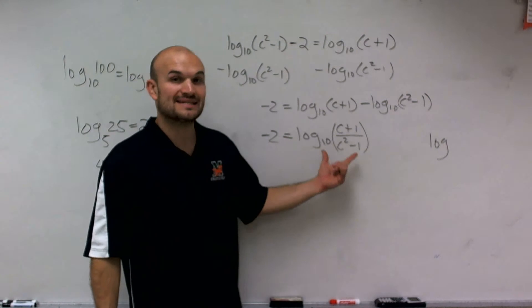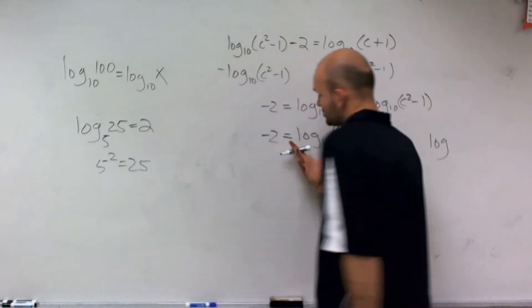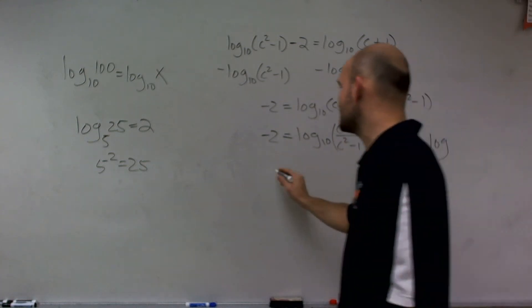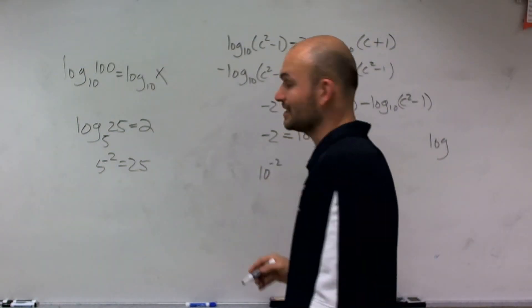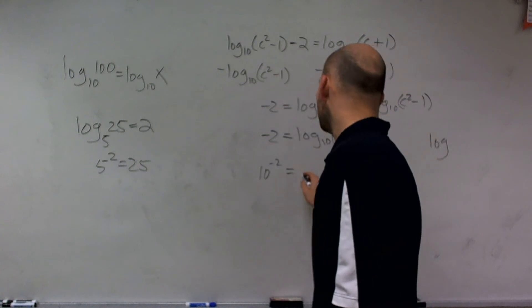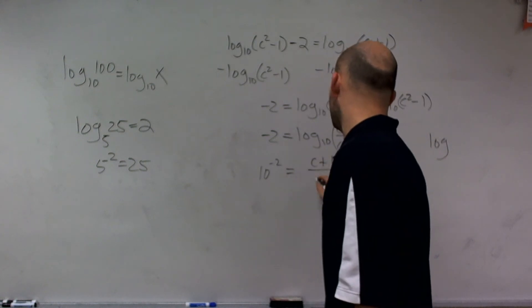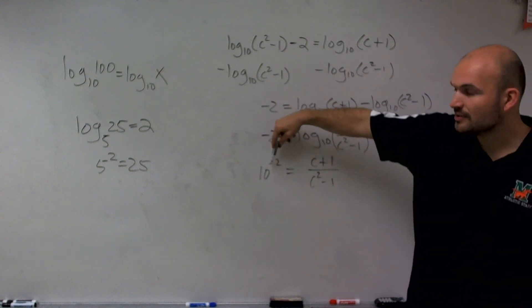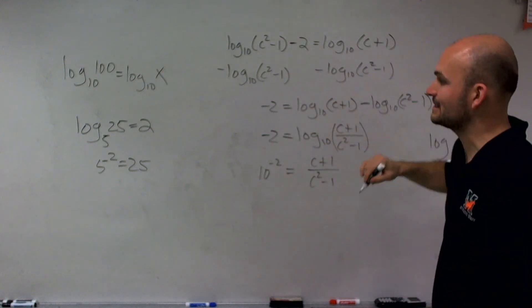So therefore, by taking this problem, which is in logarithmic form, and then rewriting it in exponential form, I keep the same base. So I say 10 to the negative second power is now equal to c plus 1 over c squared minus 1.